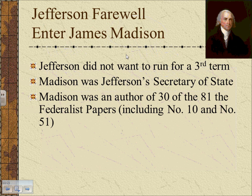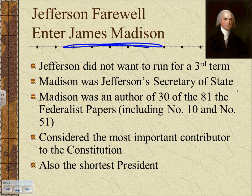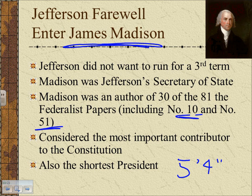After two terms as president, Thomas Jefferson stepped down, and his right-hand man in politics, James Madison, came into office — elected overwhelmingly. Madison had experience as Jefferson's Secretary of State, was an author of 30 of the 81 Federalist Papers, and is considered the most important contributor to the Constitution. He's one of the shortest presidents, standing about 5'4" — they used to refer to him as Little Jimmy or the Pygmy. But for what Madison lacks in height, he gains in intelligence.